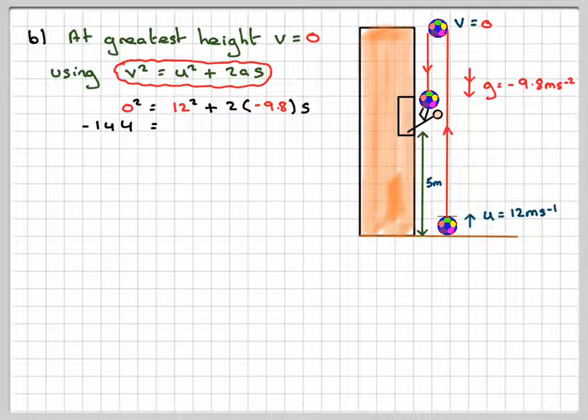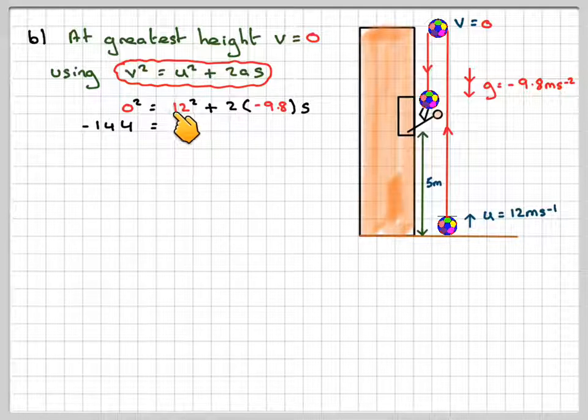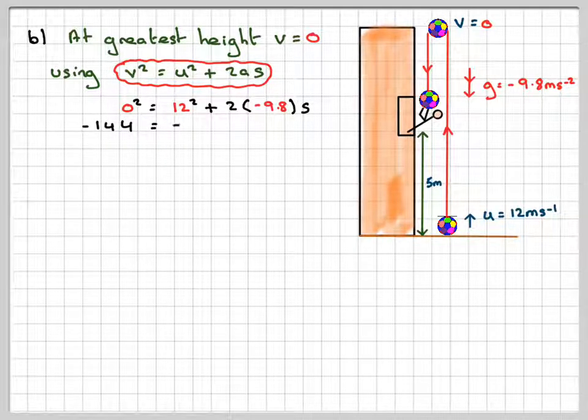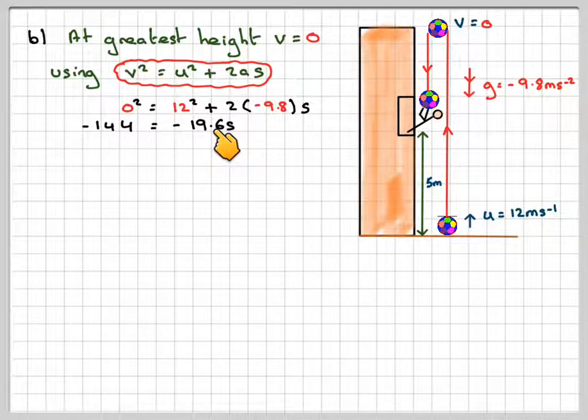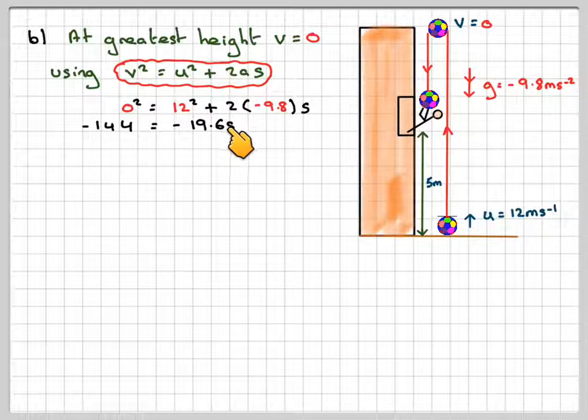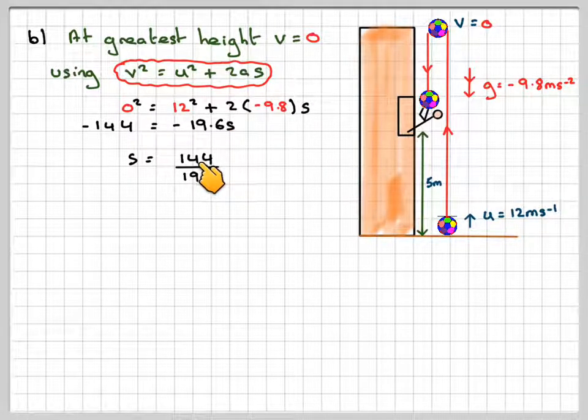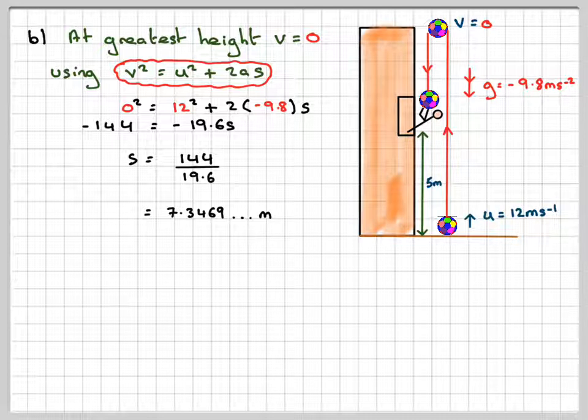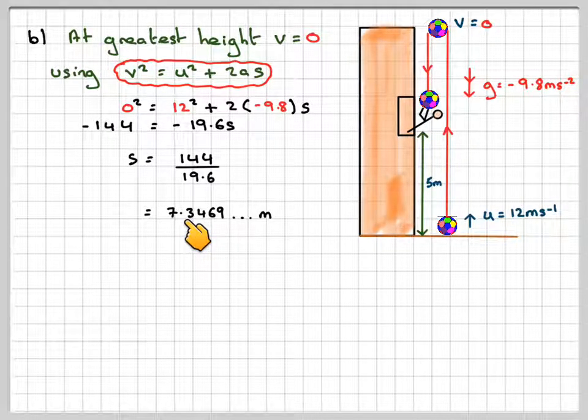So we're going to have minus 144 when we square 12 and take it over to this side. And we've got minus 19.6, 2 times minus 9.8. When we divide one by the other, the minus signs cancel out. So s will be 144 divided by 19.6, and that will give me that the greatest height of the ball will be 7.3469.